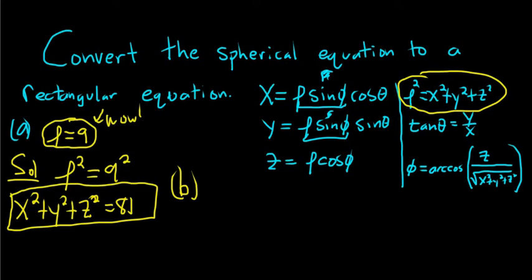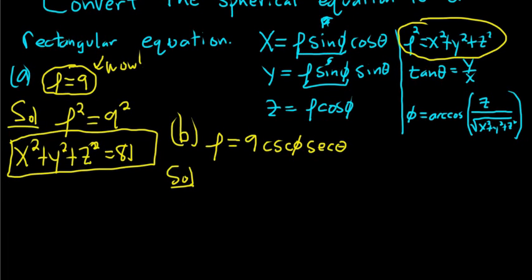So b. This one looks harder, so I haven't done it yet. So ρ equals 9, okay, cosecant, already it's harder, φ. And then we have secant θ. So we have to convert this to rectangular. Let me think here. Okay, I have an idea. So here we have cosecant and secant, but in these formulas we only have sine and cosine. So maybe we can start by dividing by cosecant and secant. So when we do that, we would get ρ over cosecant φ secant θ equals 9.